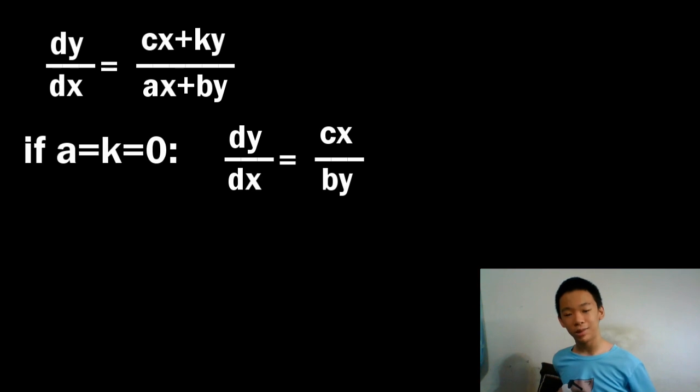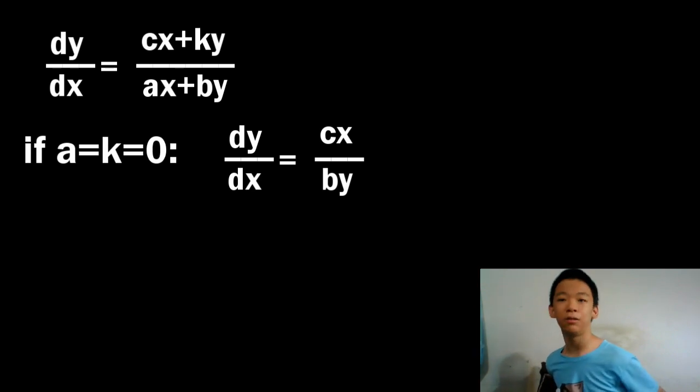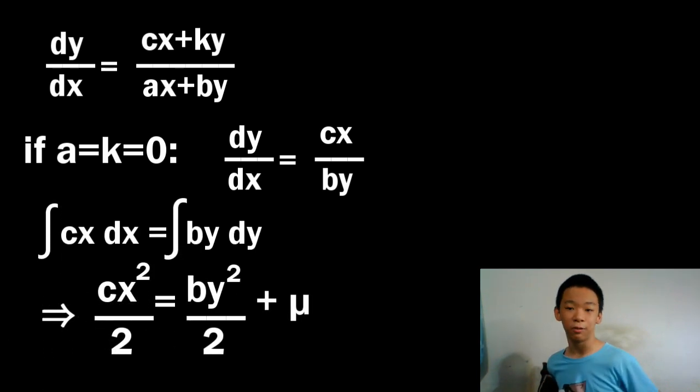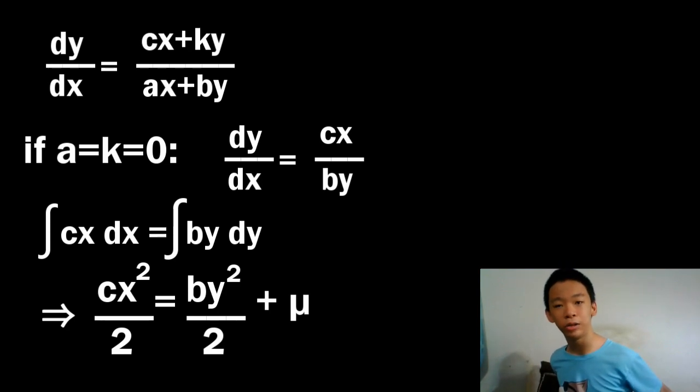But what I can do is show you the case where one of the diagonals are both zero. When a and k are both zero, we get dy over dx equals cx over by. By moving the x terms to one side, the y terms to the other side, and integrating both sides, we end up with c over 2x squared equals b over 2y squared plus mu, where mu is a constant.